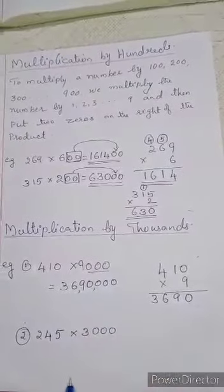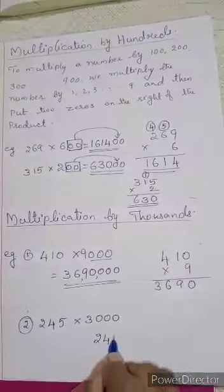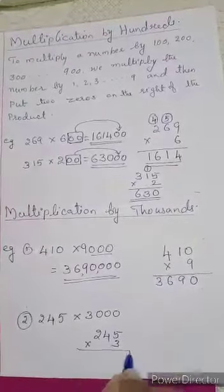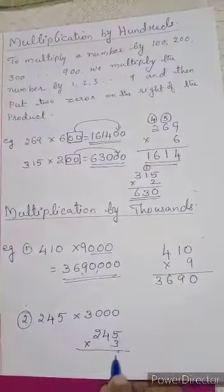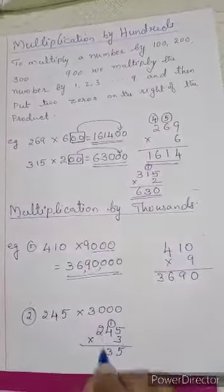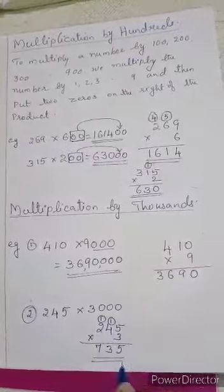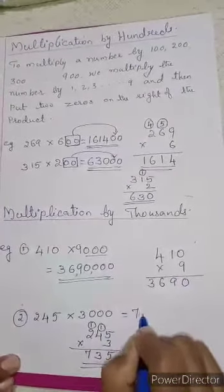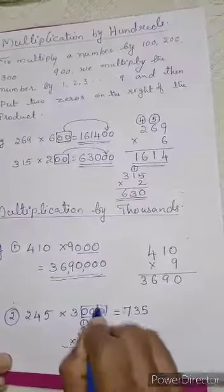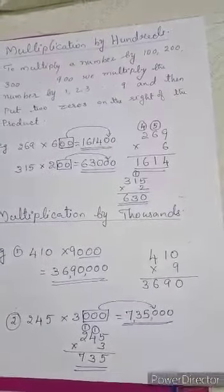Your answer is 36,90,000. Next example: 245 multiplied by 3,000. Multiply first by 3 — 3 into 5 is 15, write 5 and carry 1. 3 into 4 is 12 plus 1 is 13, write 3 and carry 1. 3 into 2 is 6 plus 1 is 7. You got 735. Then add 3 zeros at the right side. So your answer is 7,35,000.